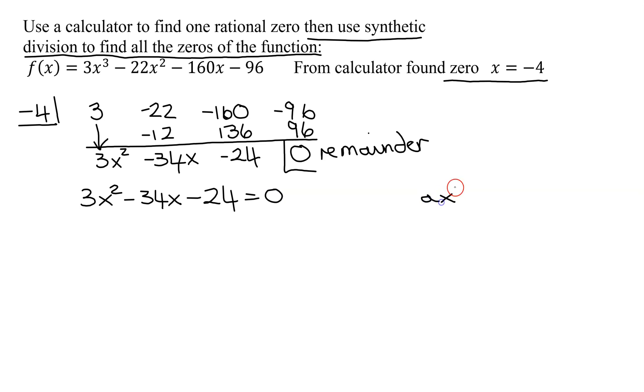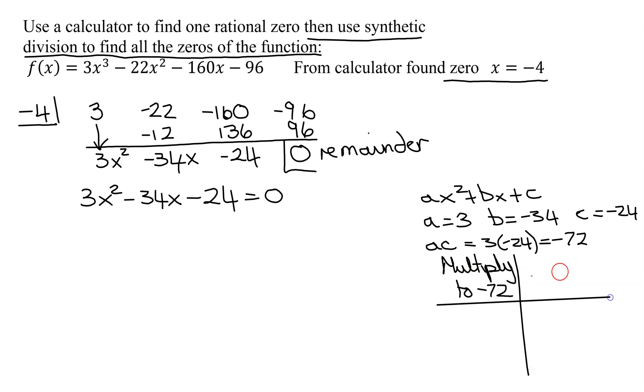To see if it factors, let's compare it to ax squared plus bx plus c. A, the coefficient of the x squared, is 3. B is the coefficient of the x, is negative 34. C is the constant term of negative 24. Multiply a times c. 3 times negative 24 is negative 72. I need two numbers that multiply to ac or negative 72, and they need to add to b, which is negative 34. Since they multiply to a negative, my signs are different. Since they add to a negative, the bigger one has to be negative.